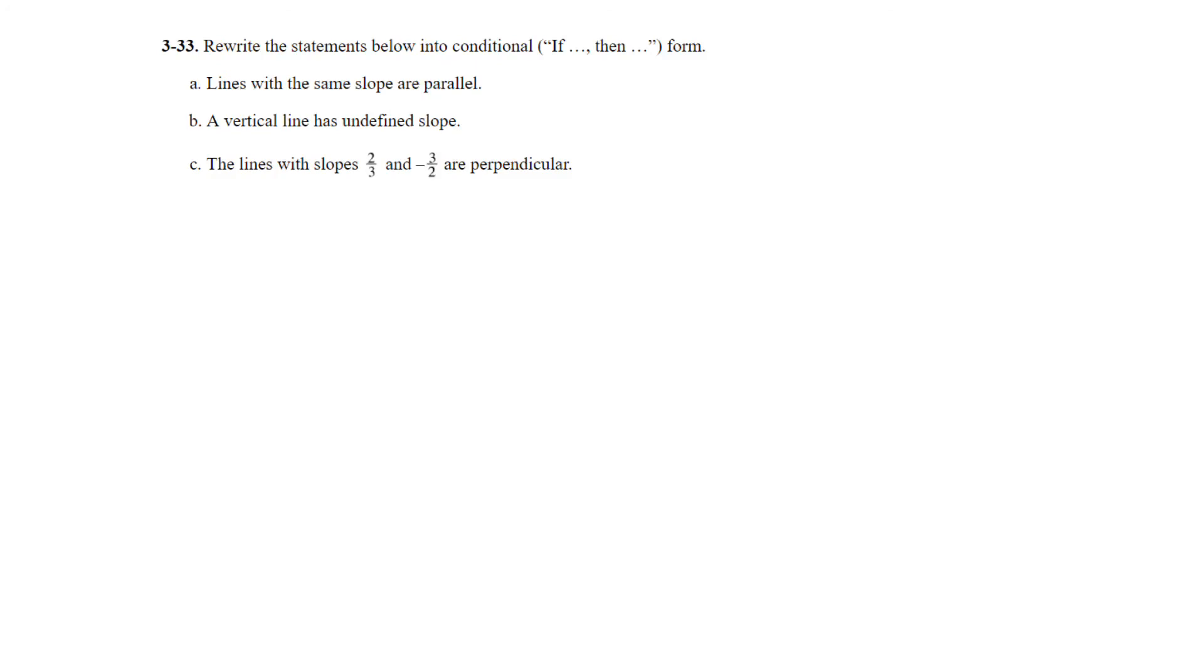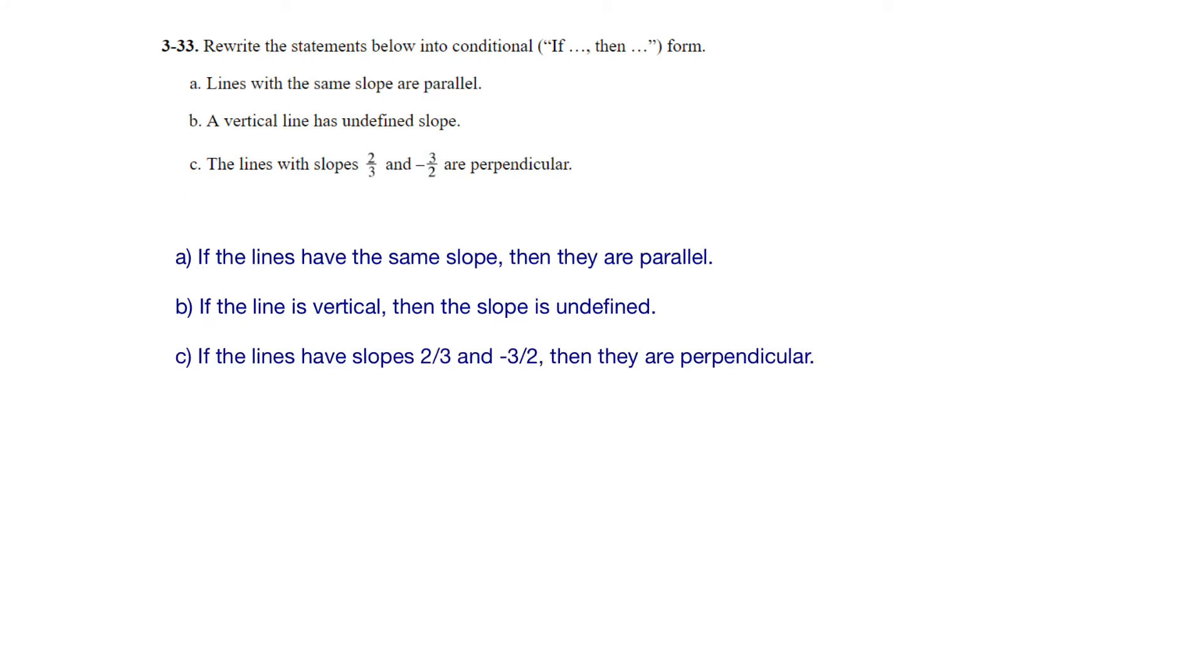Question 33. Rewrite the statements below into conditional if-then form. Part A, lines with the same slope are parallel. We would say if the lines have the same slope, then they are parallel. Part B, a vertical line has undefined slope. So if a line is vertical, then the slope is undefined. And the last one, part C, the lines with slopes 2/3 and -3/2 are perpendicular. So the conditional statement: if the lines have slope 2/3 and -3/2, then they are perpendicular. Those are the three conditional statements for examples A, B, and C.